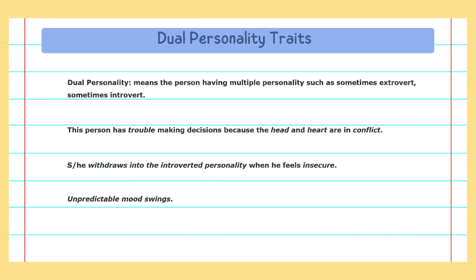Dual personality has several traits: the person may be sometimes extroverted and sometimes introverted depending on the situation. They have trouble making decisions because their head and heart are in conflict. When they feel insecure, they convert to their introverted personality. This person also experiences unpredictable mood swings because their emotions are not stable.